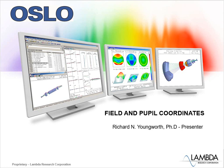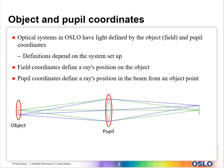In this Oslo video I'll talk about field and pupil coordinates. Object and pupil coordinates are used to define the rays that are traced through an optical system, and the definitions depend on the system setup. In some cases you might have an object that is very far away, infinitely far away, and you define the object points with angles.